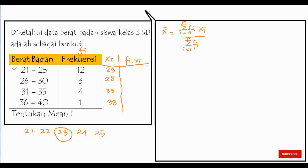Kemudian, FI kali XI, frekuensi dikalikan titik tengah. Berarti ini kalian kalikan. 12 dikalikan dengan 23, nilainya itu adalah 276. 3 dikalikan 28, menghasilkan 84. 4 dikalikan 33 menghasilkan 132. 1 kali 38, 38. Karena memang sudah dihitung terlebih dahulu.